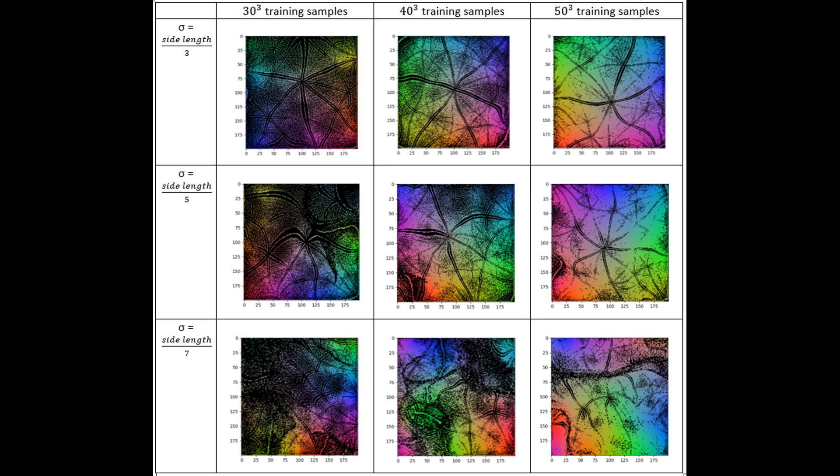By varying parameters of the algorithm, like the number of training samples and the initial width of the Gaussian function, the patterns change.